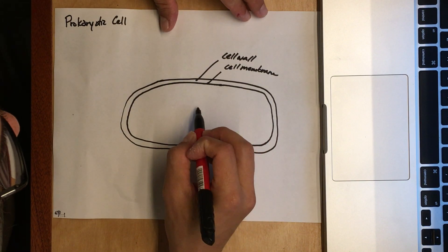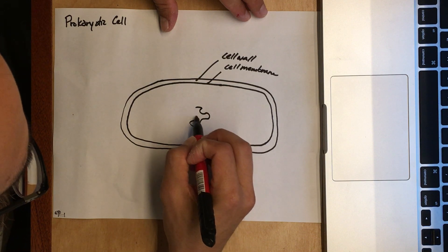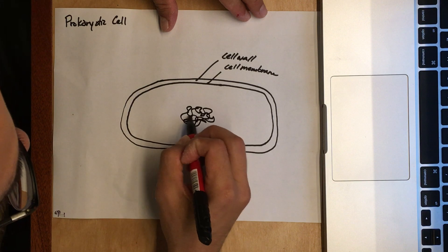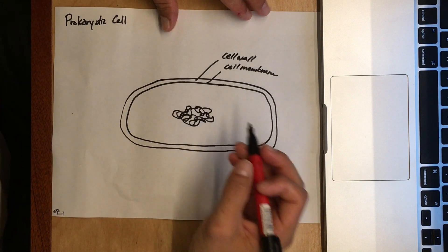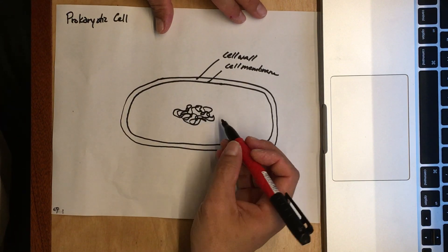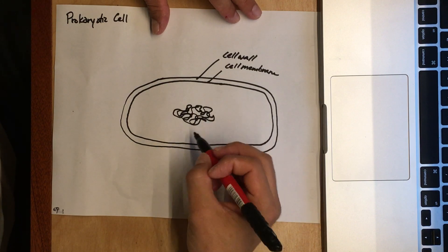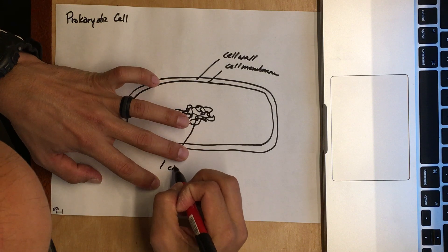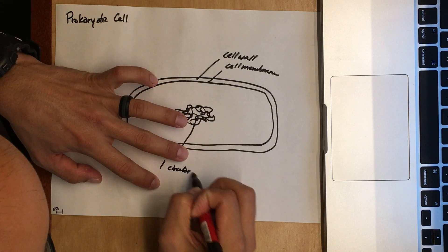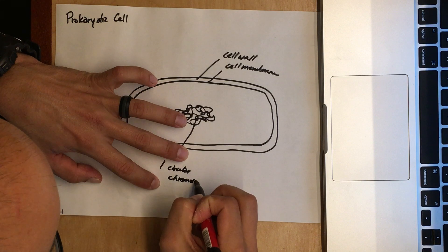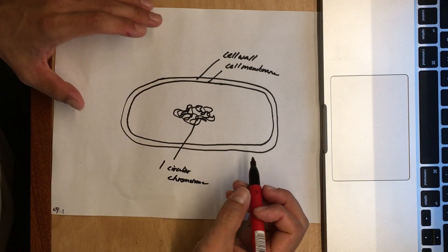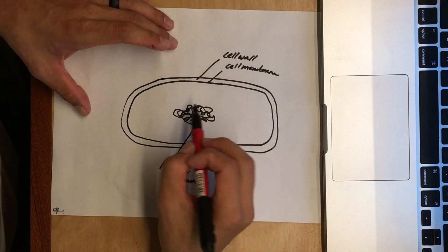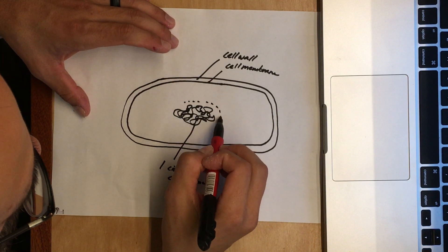There is one circular chromosome, but it's all squiggled up because it's being used—it's unwound so the organism can gain access to those genes. Since it's a prokaryotic cell, the DNA is not inside a nucleus. It doesn't have a nucleus, but this area where you find that chromosome...